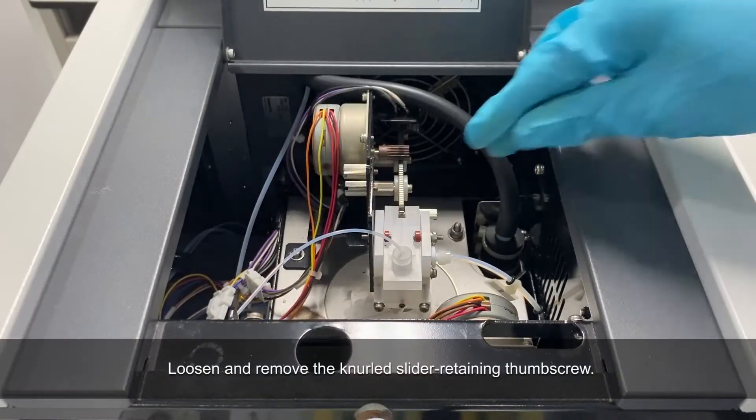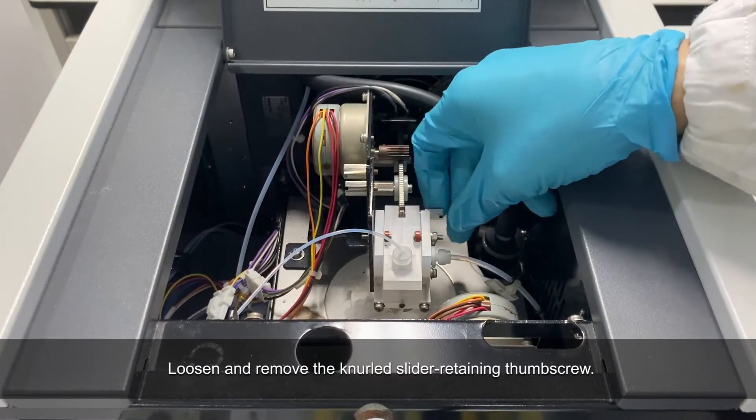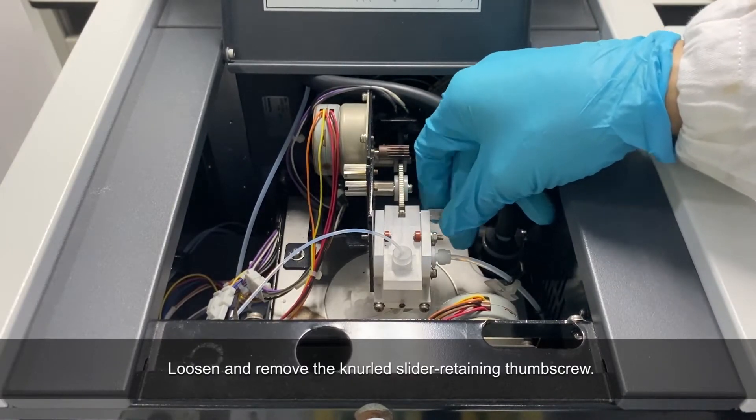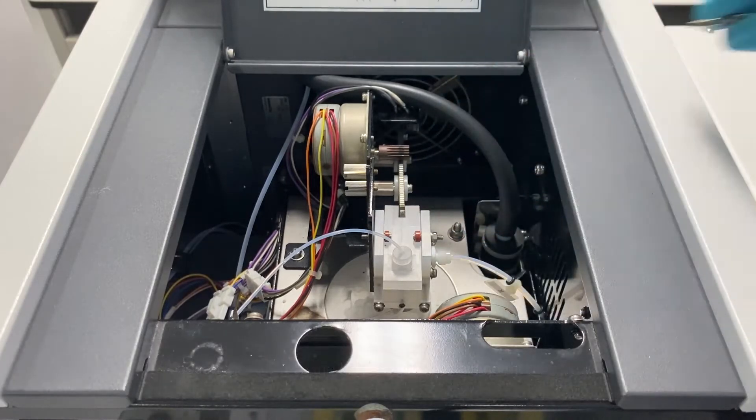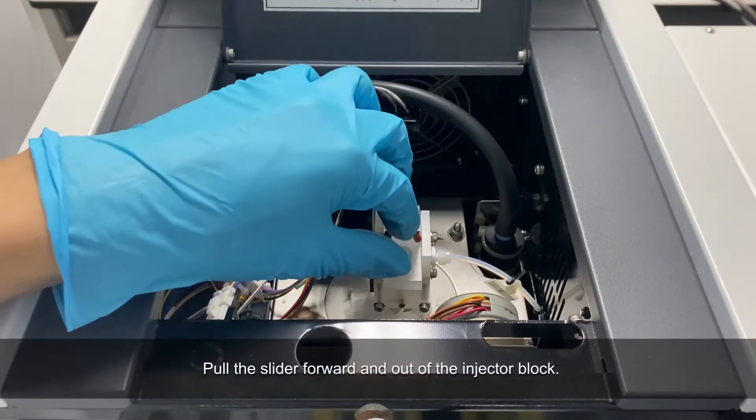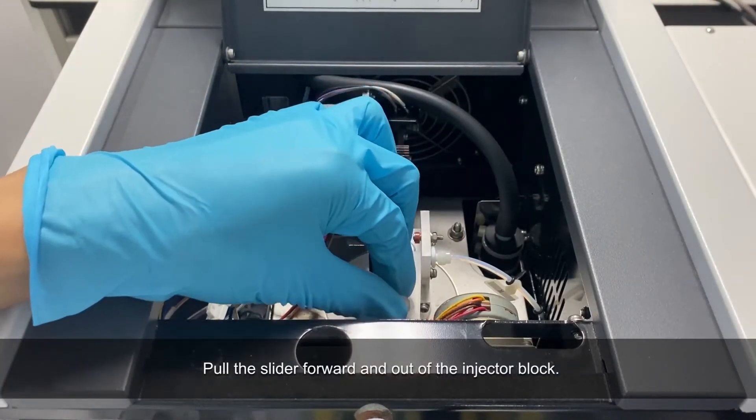Loosen and remove the slider retaining thumb screw. Pull the slider forward and out of the injector block.